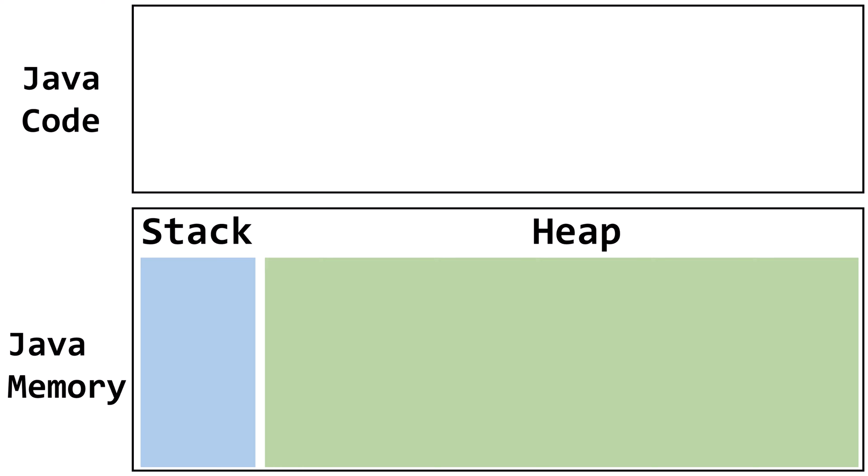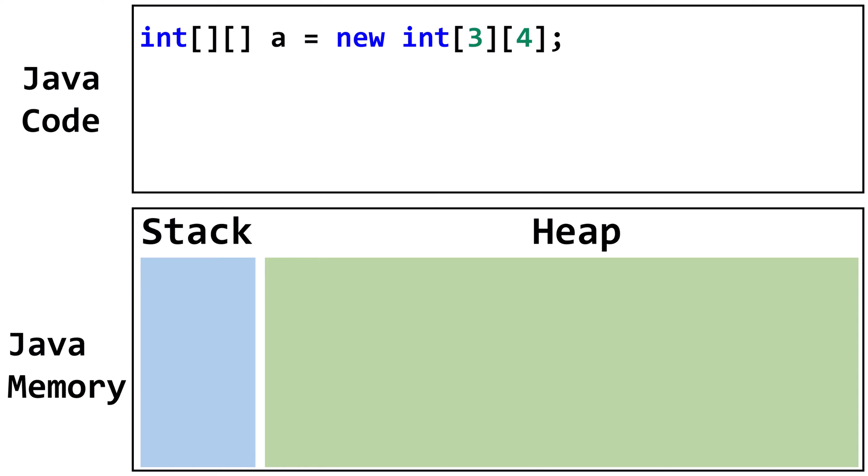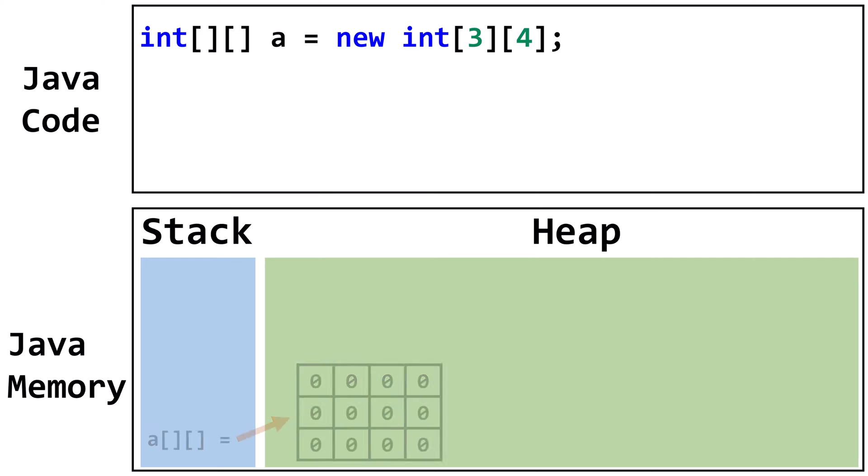Let's start by declaring a variable A. Notice two sets of square brackets after the data type, which indicate A will point at a 2D array of int. Next, let's initialize the variable with a new array object. The two numbers tell Java the dimensions of the array. Being an array of int, the elements will default to zero.